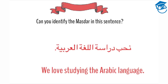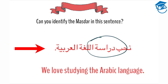Let's look at another example. Can you identify the masdar in this sentence? It means: we love studying the Arabic language. Yes, the masdar is dirasa. Dirasa til lugha til arabiyah is definite because it's part of an idafa. And here, the masdar is the second verbal action in the sentence. The first one is nuhibbu — nuhibbu means we like or we love.